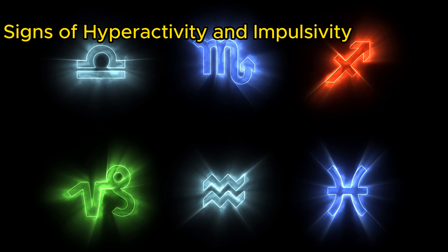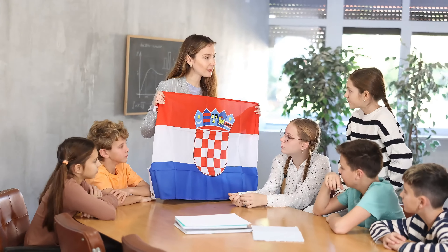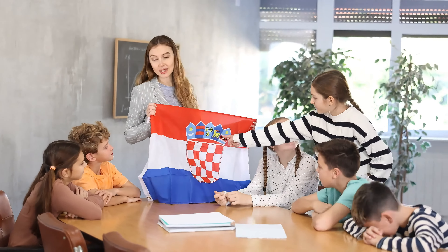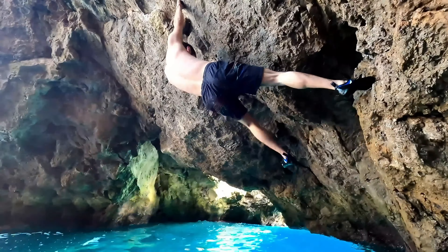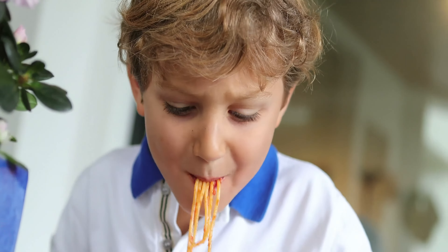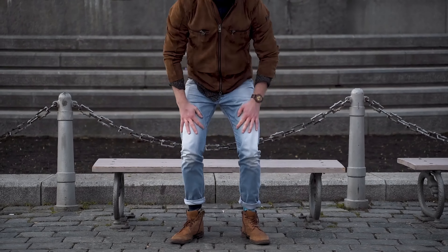Signs of hyperactivity and impulsivity include: fidgeting with hands or feet; having trouble staying seated in situations where it's expected, like in class; running around or climbing in situations where it's not appropriate; having difficulty playing quietly; talking too much; interrupting others or butting into conversations; and finding it hard to wait for their turn.